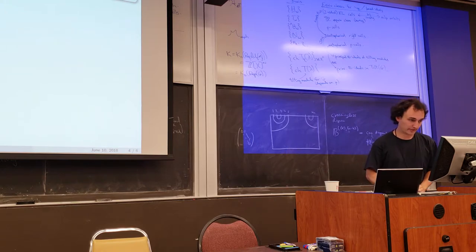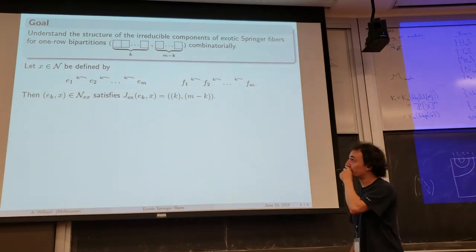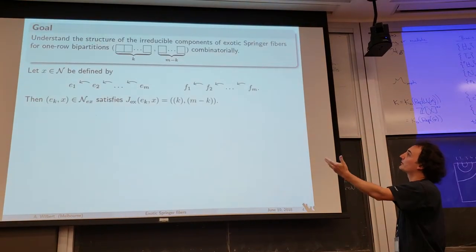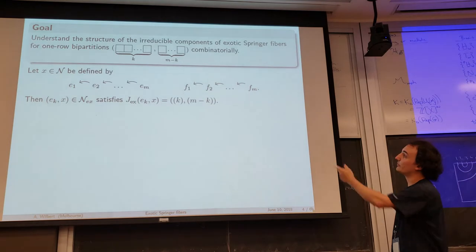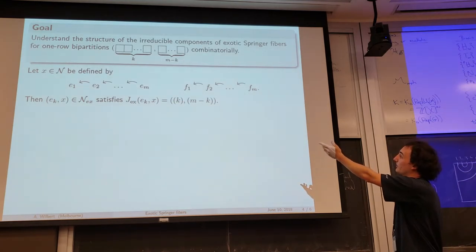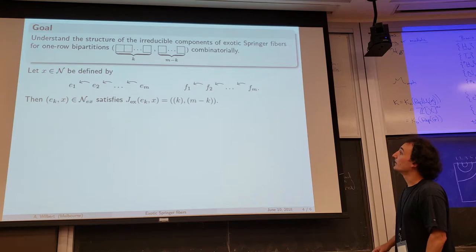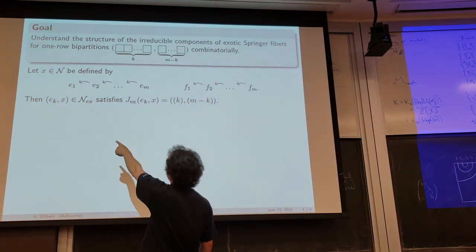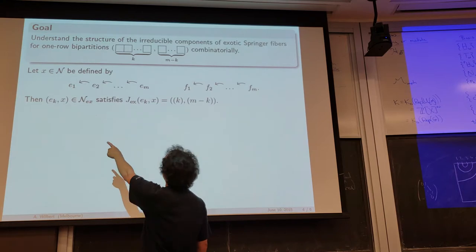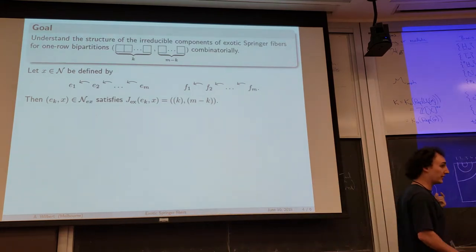How can I relate this combinatorics to the geometry? First I need to fix some representatives. For these bipartitions, I pick a specific representative: a nilpotent element X that acts on the basis so that E1 and F1 are sent to zero, and otherwise acts as indicated on the basis of C to the 2m. Then if I take E_k — one of the Jordan basis vectors, where which one I pick depends on the number of boxes in the first partition — the pair (E_k, X) is a representative of the orbit labeled by this bipartition. Now I can actually look at the Springer fiber, and one result we have is the following: there is a bijection between these cup diagrams and the irreducible components of that Springer fiber.